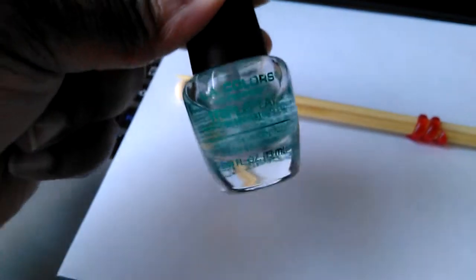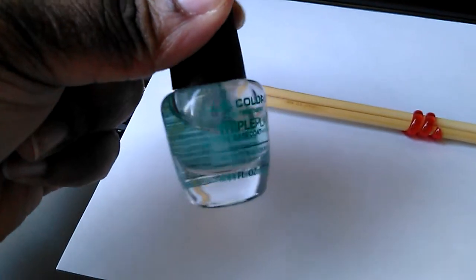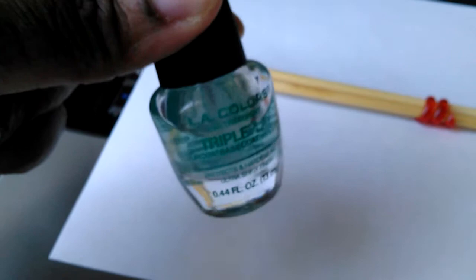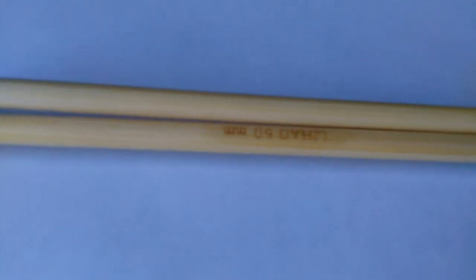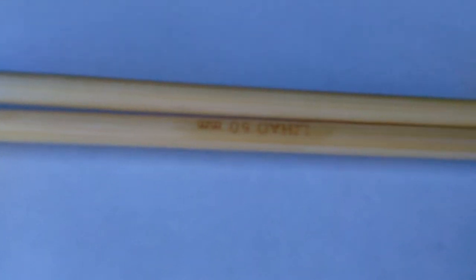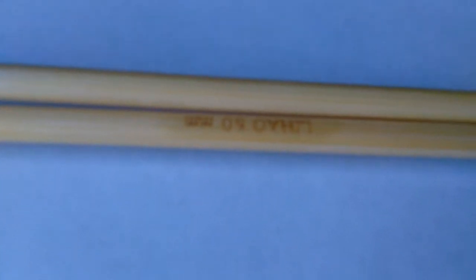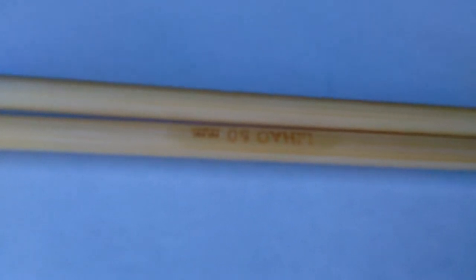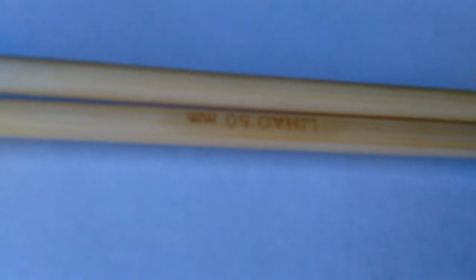You just take a little dab of it and brush it over. You can kind of see it, but not really. It looks like a little damp spot, but that is the hardener.